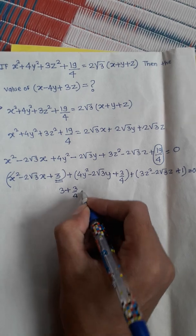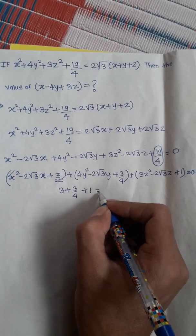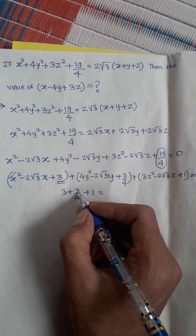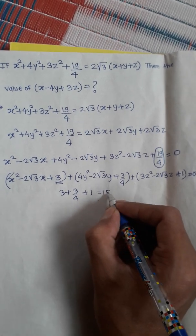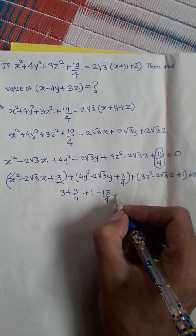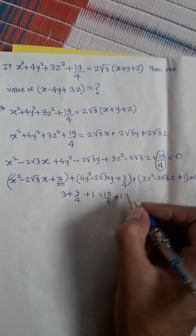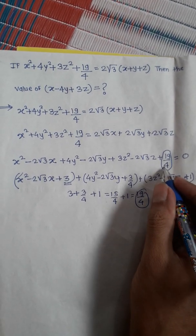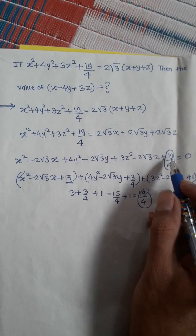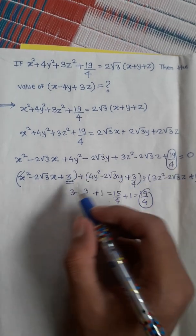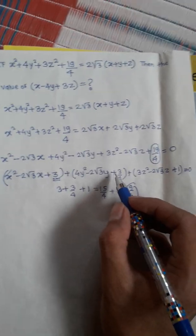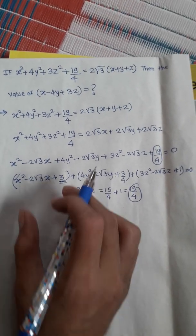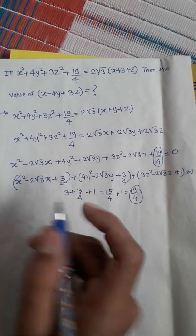We verify: 3 + 3/4 + 1 = 12/4 + 3/4 + 4/4 = 19/4. The same as we had. So we have split 19/4 into 3, 3/4, and 1.